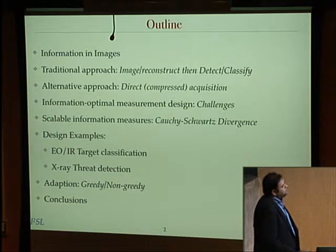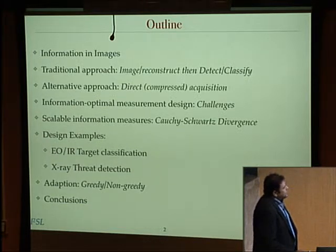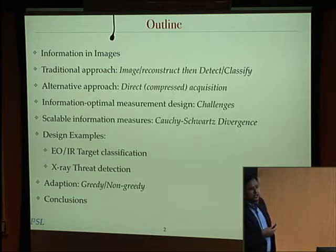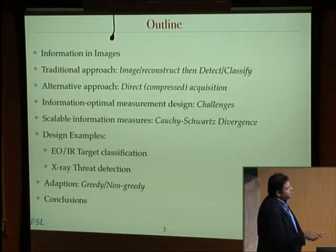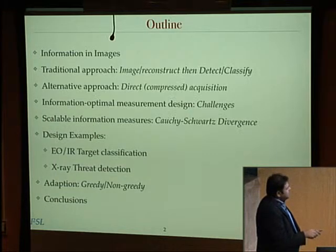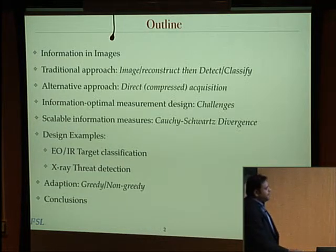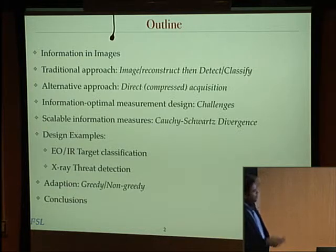I'll introduce what I mean by information-optimal measurement design in terms of imaging systems. I'll talk about the fundamental challenges in applying information-theoretic measures. More recently, in the last five years, we have looked at scalable information measures that you can actually compute and use for designing systems with realistic dimensions in real-world scenarios as opposed to toy problems. That will lead us to this topic of Cauchy-Schwarz divergence. Then I'll illustrate this framework with concrete design examples — in the visible IR spectrum for target classification, and in the X-ray regime for threat detection — and I'll end with the idea of adaptive measurements, specifically greedy versus non-greedy measurements.